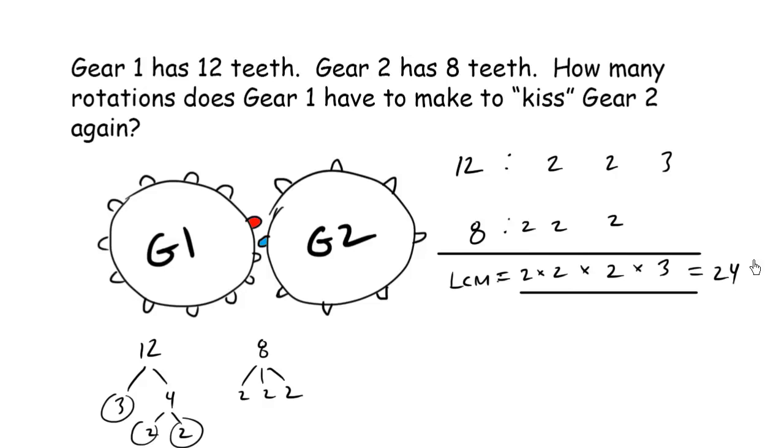Now, 24 represents the total number of teeth clicks. 1, 2, 3, 4, 24 teeth clicks before they meet again.